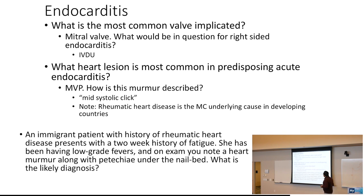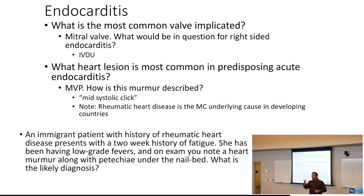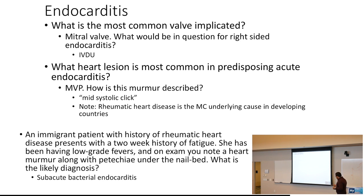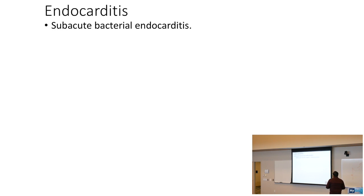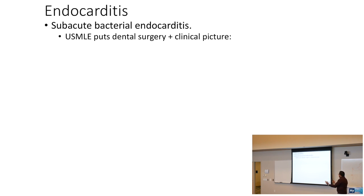An immigrant with history of rheumatic heart disease presents with a two-week history of fatigue and low-grade fevers. On exam, there is a heart murmur and petechiae under the nail bed. This indolent course points to subacute bacterial endocarditis. On the USMLE, dental surgery plus fever plus murmur is a key buzzword combination for subacute bacterial endocarditis.